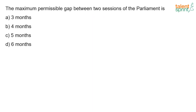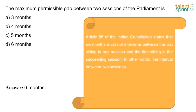The maximum permissible gap between two sessions of Parliament is six months. According to Article 85 of the Indian Constitution, six months must not intervene between the last sitting of one session and the first sitting of the succeeding session — in other words, the interval between two sessions should not exceed six months.